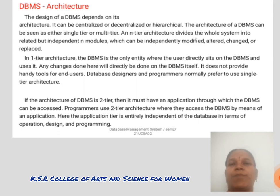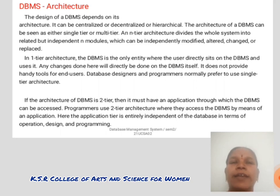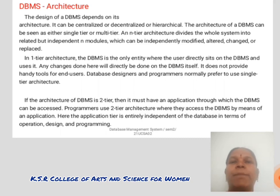DBMS Architecture. The database management system depends on its architecture. It can be centralized, decentralized, or hierarchical. The architecture of DBMS can be seen as either single-tier or multi-tier. An n-tier architecture divides the whole system into related but independent modules which can be independently modified, altered, changed, or replaced.